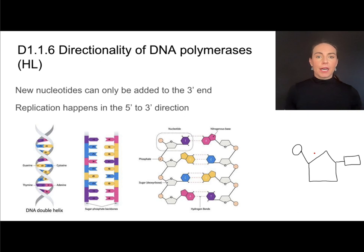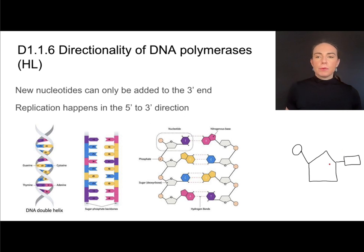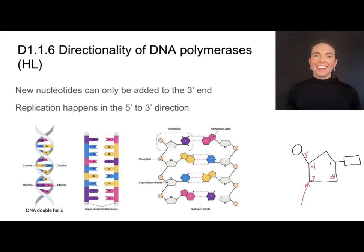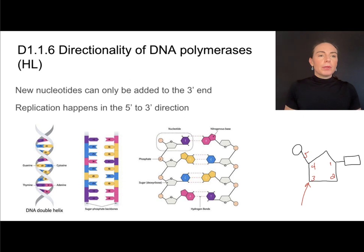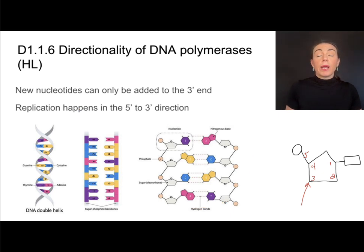New nucleotides can only be added to the 3-prime end. Going back to number those carbons — 1, 2, 3, 4, and the 5th one is up here — that means new nucleotides can only be added to the 3-prime end. Applying that knowledge to this molecular view of a DNA strand, let's first identify where the 5-prime and 3-prime ends are.